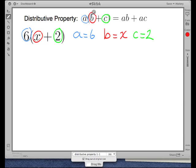So what does the distributive property tell us to do? It says that we first have to multiply a times b. Since a is 6 and b is x, we're going to start out by multiplying 6 times x. Next, we're going to add a times c, which in our expression is 6 times 2.